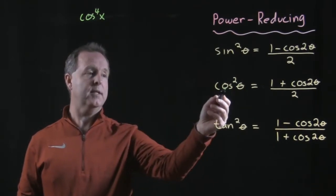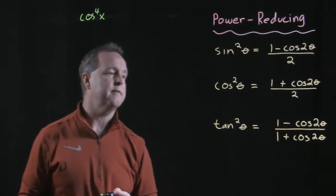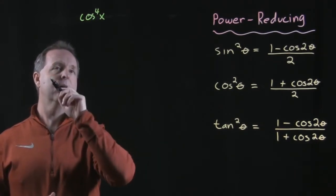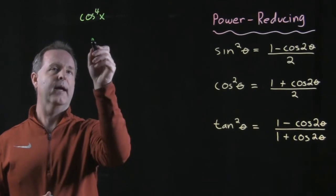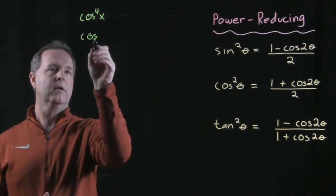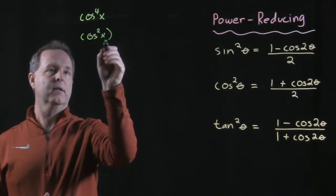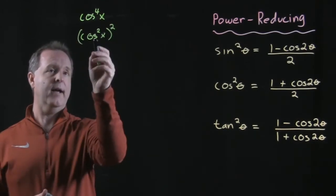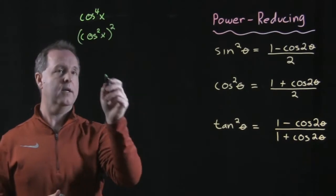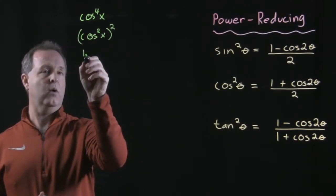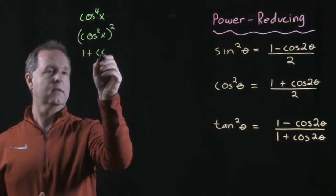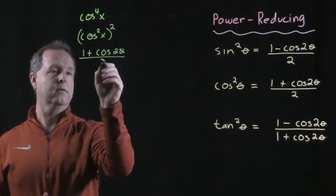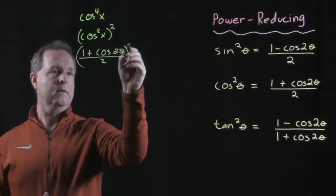With that looks like I can use the cosine power-reducing formula which says that I can rewrite this as, okay I know what I'm going to do, I'm going to do cosine squared of x all squared. That's the same thing. Now I can go ahead and use the cosine squared which tells me that's 1 plus cosine of 2 theta all over 2 all squared.